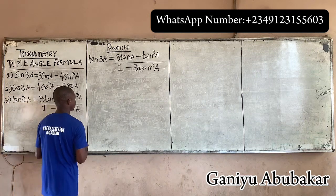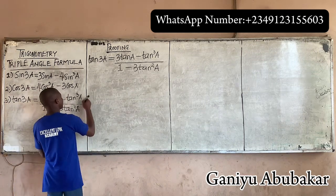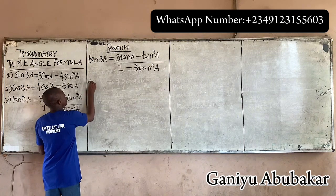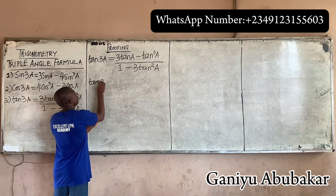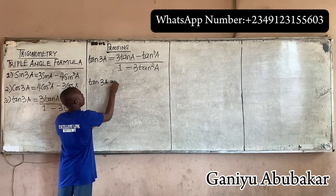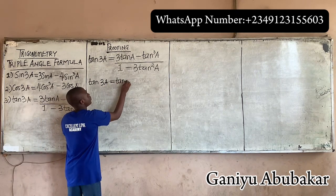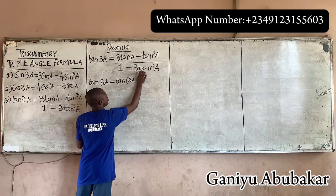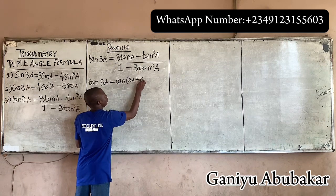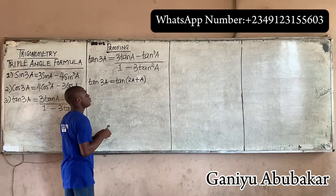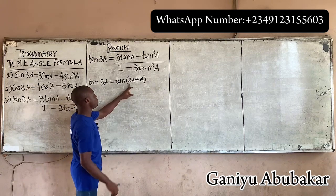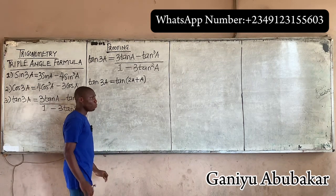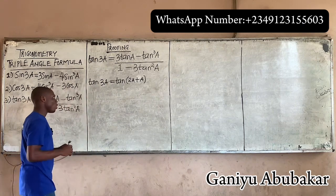First, I'll break down tan(3a). Tan(3a) can be expressed as tan(2a + a), and I know that 2a plus a will automatically give 3a — no problem at this point.